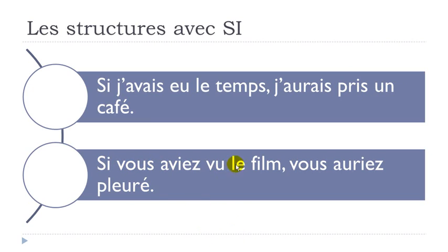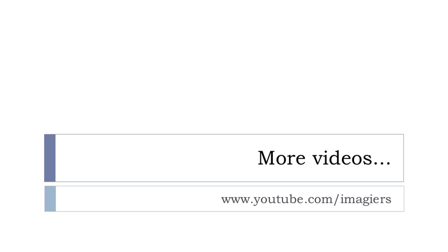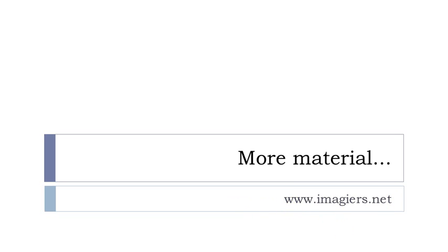Second example: SI VOUS AVIEZ VU LE FILM — VOIR at the PLUS-QUE-PARFAIT form — VOUS AURIEZ PLEURÉ. PLEURER means 'to cry,' and it's at the CONDITIONNEL PASSÉ form. So: 'If you had seen the film, you would have cried.' That's the classic structure to express regrets using SI. If you want more videos, visit youtube.com/imagier and the website imagier.net. Bye-bye!